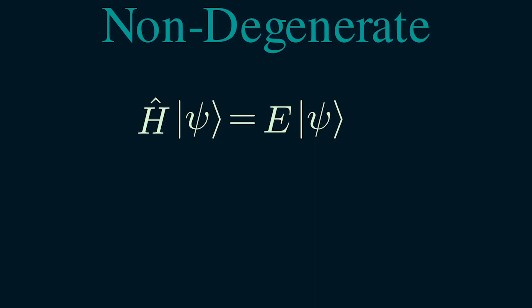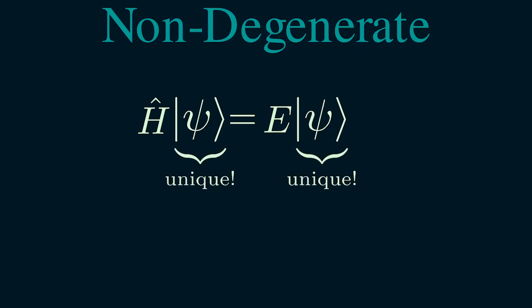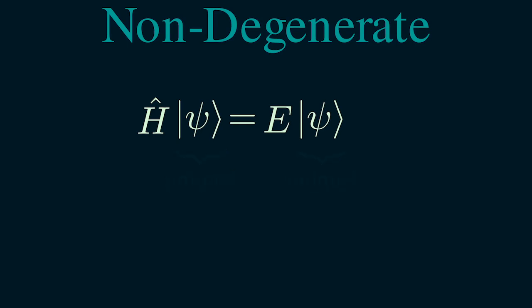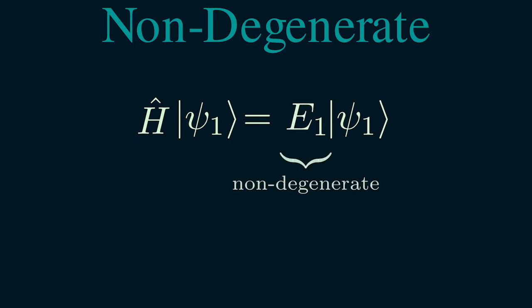The term non-degenerate means that there is one and only one eigenstate psi corresponding to an eigenvalue E. In other words, if E1 is an energy eigenvalue with corresponding eigenstate psi1, then energy level E1 is said to be non-degenerate if psi1 is the only eigenstate for the eigenvalue E1.